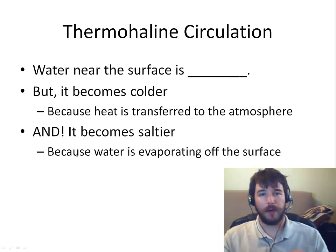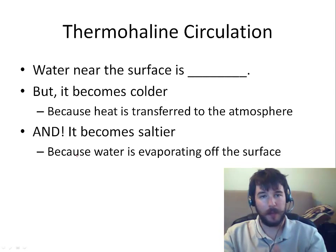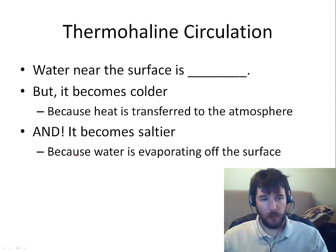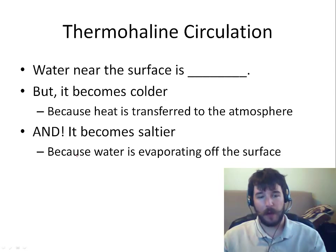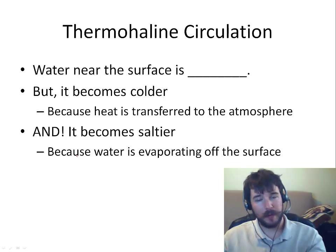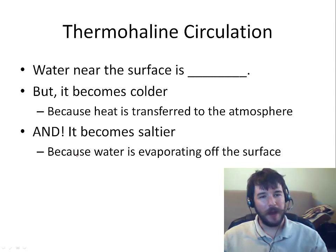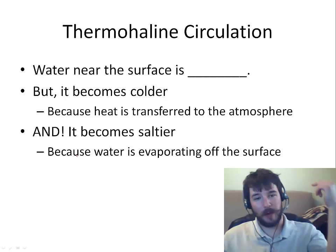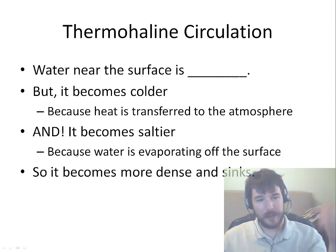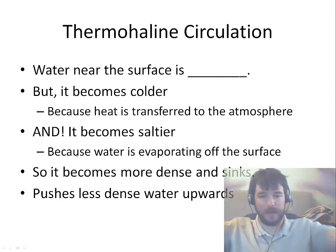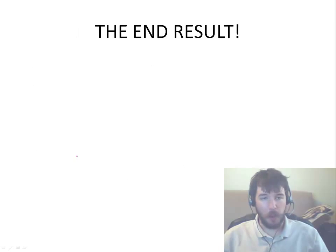It becomes saltier because water evaporating off the top leaves the salt behind. Salt is a very common evaporite mineral — one of our hydrogenous sediments. So when the water evaporates, it leaves the salt behind. The water becomes colder as it loses heat to the atmosphere, and it becomes saltier. Now with more salt and less heat, that's going to make it more dense, so it goes down, and as it goes down it's going to push the less dense water around it upwards.